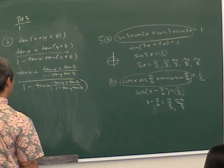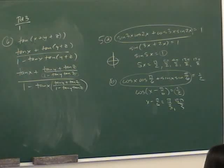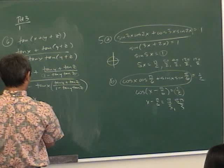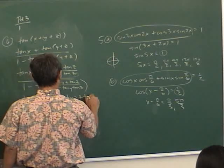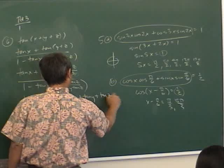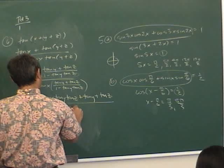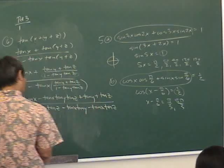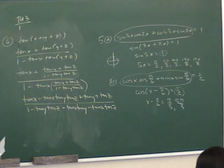To simplify, multiply top and bottom by the least common denominator. Doing this gives: (tan x + tan y + tan z − tan x·tan y·tan z) over (1 − tan y·tan z − tan x·tan y − tan x·tan z). What we actually did in this problem is derive the identity for tangent(x + y + z).